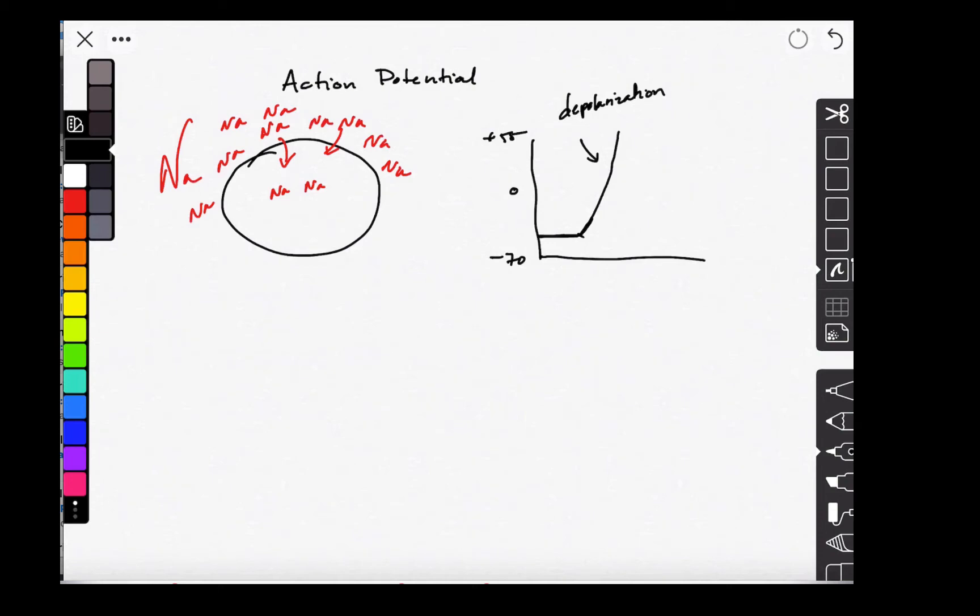Once the cell reaches its peak depolarization, these sodium channels inactivate. And that basically means that they close, they stop letting more sodium in.